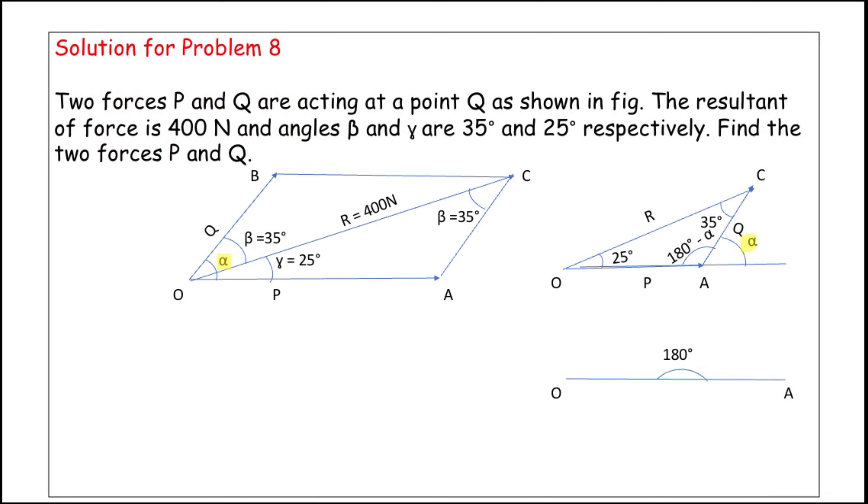The resultant of forces is 400 Newton, and angles beta and gamma are 35 degrees and 25 degrees respectively. Find the two forces P and Q.